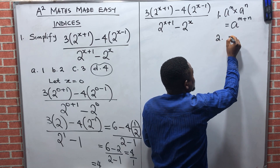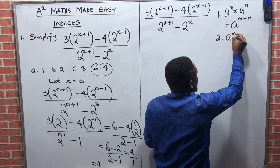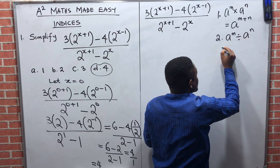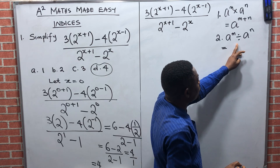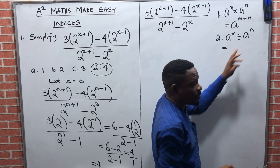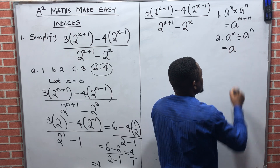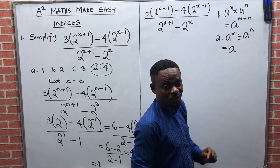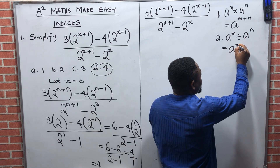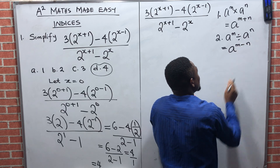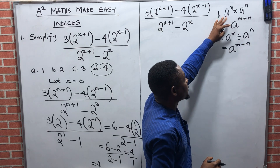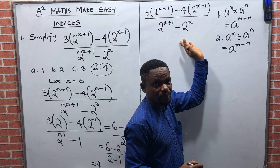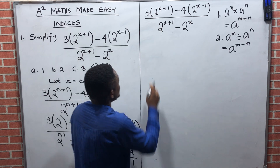That is one of the laws to note. Then followed by: if you have a raised to power m divided by a raised to power n, this time it is division. Since the bases are the same, you pick one of the bases and introduce minus, giving you m minus n. With this analysis, you can now solve this particular problem. Let's go back to the question.